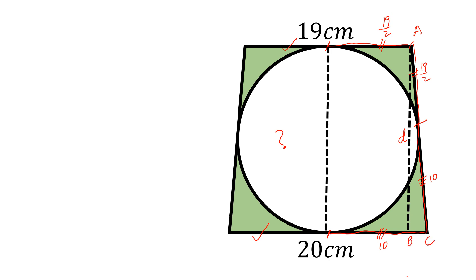So AB is equal to D and BC is equal to, from here to here, this is 10. So BC is equal to 10 minus this length is 19 by 2, minus 19 by 2 and BC is equal to 1 over 2 and this is equal to 0.5.